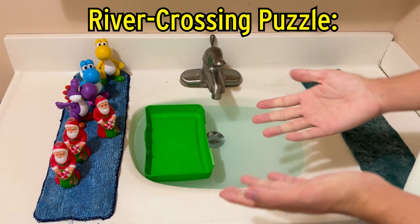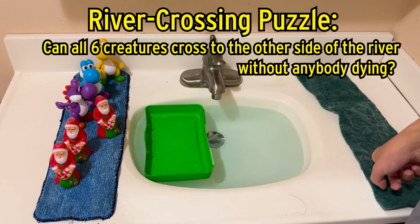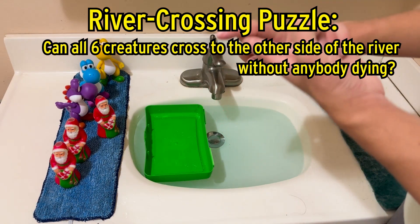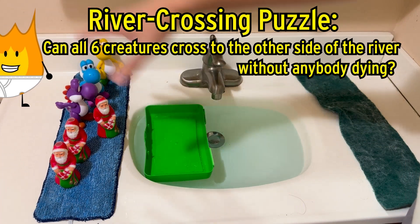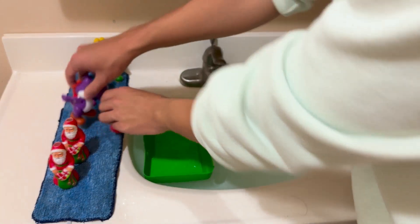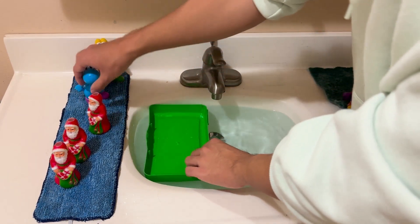So at the end of the day, what is the puzzle? Can all six creatures cross to the other side of the river without any of them dying due to getting eaten, drowning, or being stranded on the left side as the wildfire comes in? So get some pencil and paper out, try some random combinations of raft usages from both sides and see what you get.